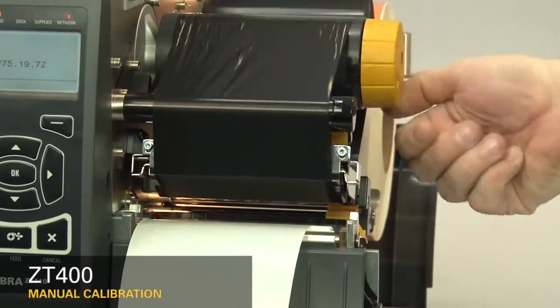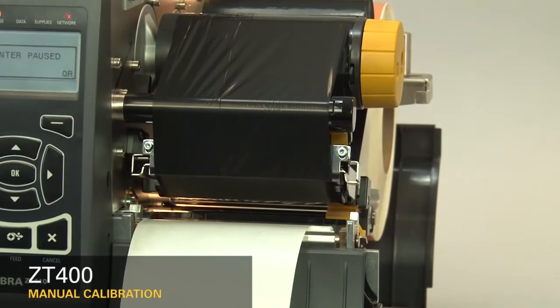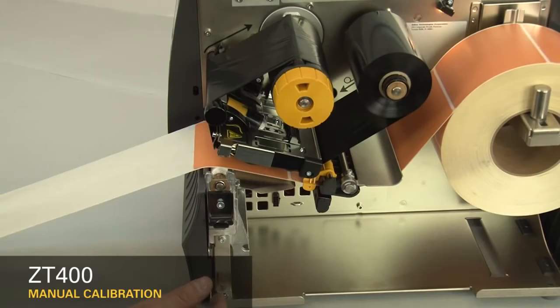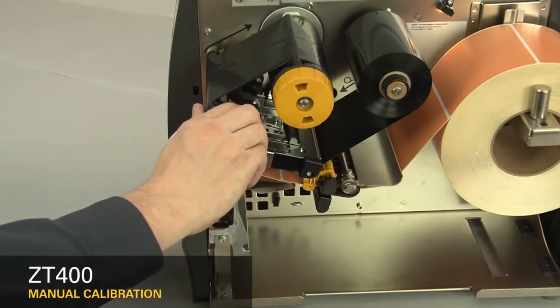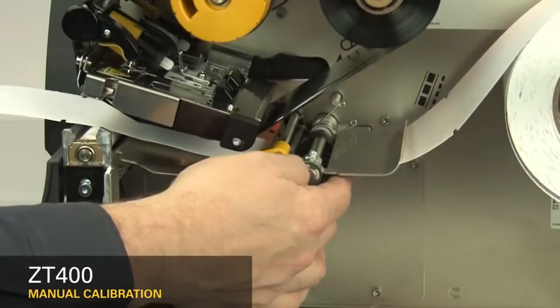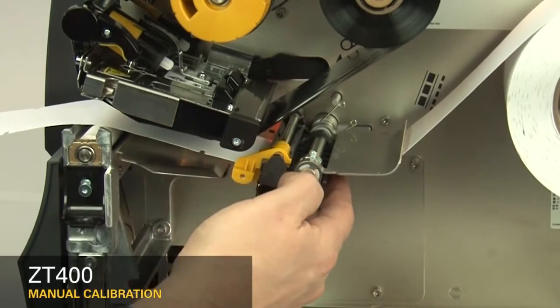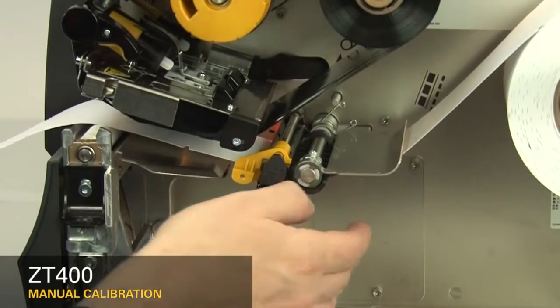If your media has a gap, hole or notch, be sure that the media and not the gap or hole or notch is under the media sensor. If your media has a black mark, the black mark position does not matter. Be sure that the media is installed correctly. When you've reloaded the supplies, close the printhead and press the pause button to continue.